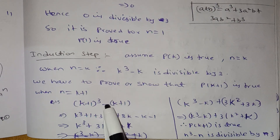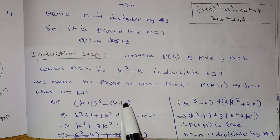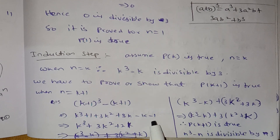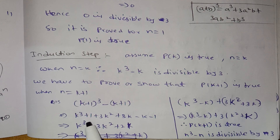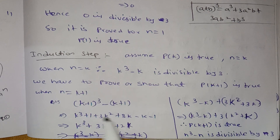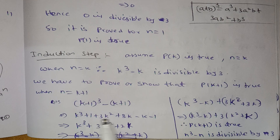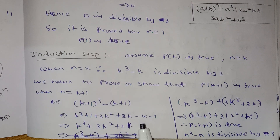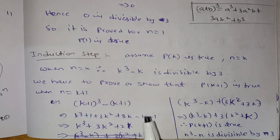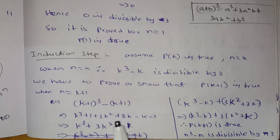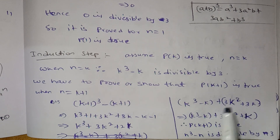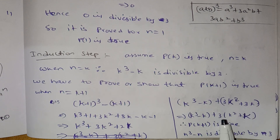So we get: k cube plus 3k square plus 3k, then minus k, minus 1, plus 1, minus 1. Simplifying: k cube minus k, plus 3k square plus 3k. We take 3 as a common factor from 3k square plus 3k.